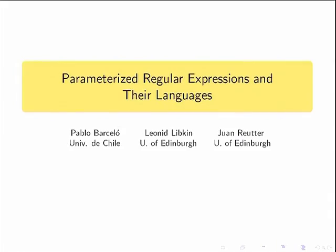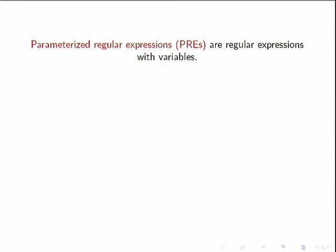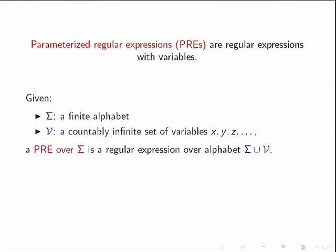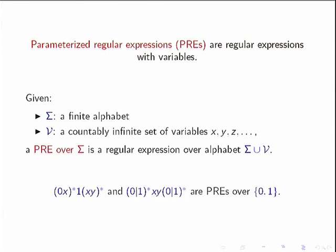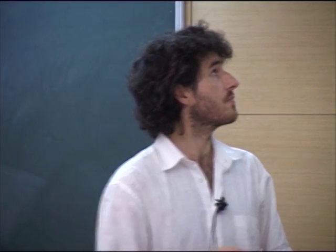Our work with co-authors Leonid and Pablo is about parameterized regular expressions. Parameterized regular expressions are just regular expressions with variables. We work with a finite alphabet sigma — in this talk, just the symbols 0 and 1 — and we also consider a set of variables V. We can have as many variables as we want, and we consider expressions over this combined alphabet using sigma and V.